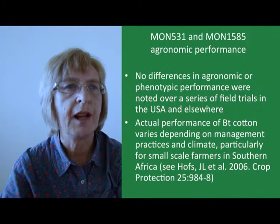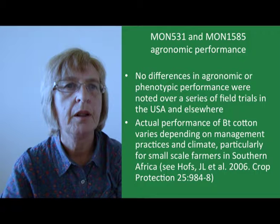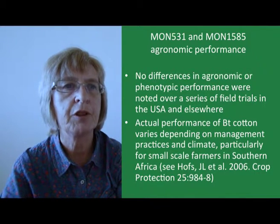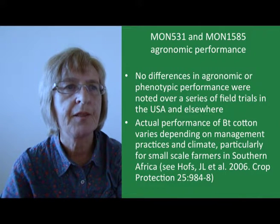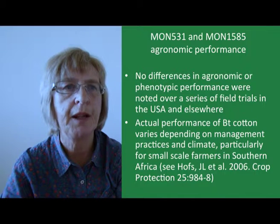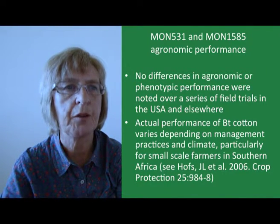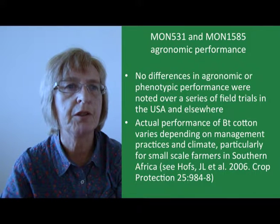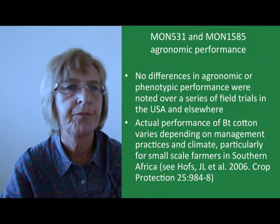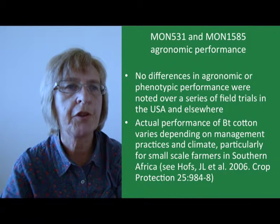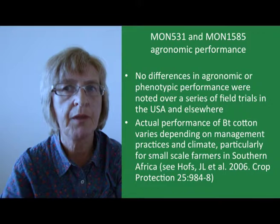No differences in agronomic performance between MON531, MON15985 and conventional cotton have been found in a series of field trials in the US and elsewhere, except for the impact of the introduced traits. In practice, the actual performance of BT cotton will vary depending on management practices and climate. One recent concern for BT cotton grown in Burkina Faso has been the shorter fibre length of the BT cotton compared with conventional cotton — an issue that needs to be dealt with through conventional breeding to ensure the trait is introgressed into local varieties without loss of the longer fibre length.